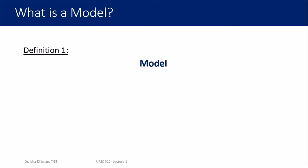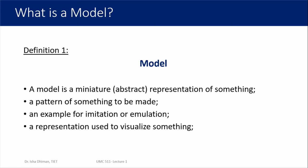A model is a miniature or abstract representation of something. It is called miniature because most of the time the model is drawn on a small scale compared to the real object. It can be a pattern of something to be made — before actual construction we want to understand it through the modeling process. It can be an example for imitation, where you replicate a real phenomenon through modeling, or a representation used to visualize something.